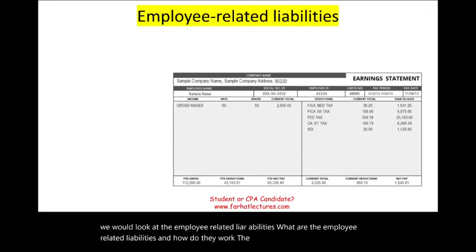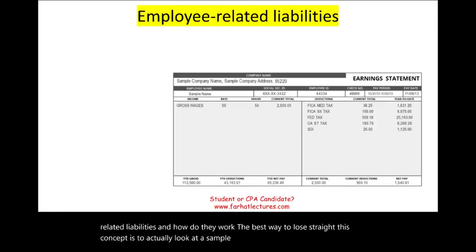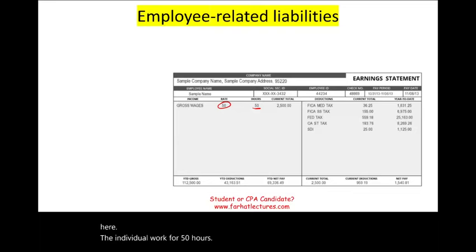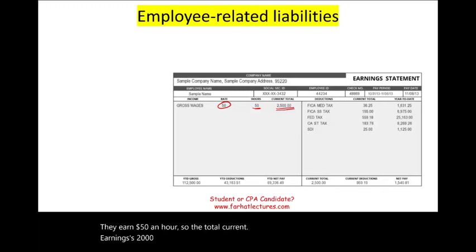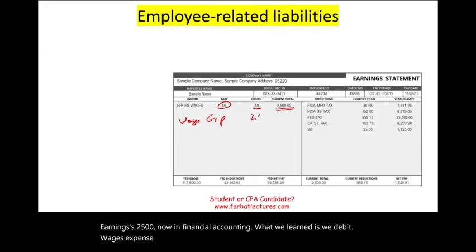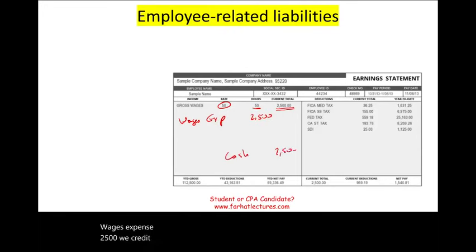The best way to illustrate this concept is to look at a simple paycheck. For example, this individual worked 50 hours and earned $50 an hour, so the total current earnings is $2,500. In financial accounting we learned to debit wages expense $2,500 and credit cash $2,500.